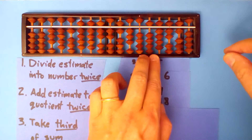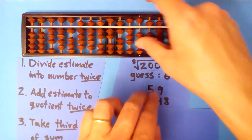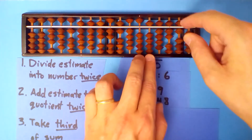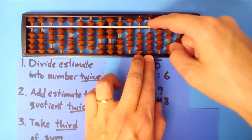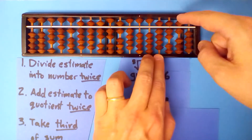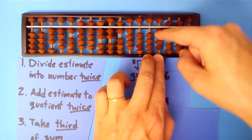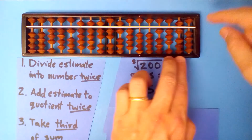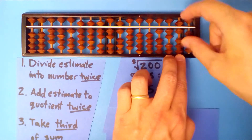That wasn't quite enough, so I'll add one more: 1 times 5 is 5, 1 times 8, 1 times 4, and that's close enough.